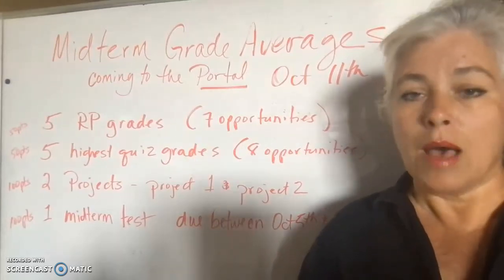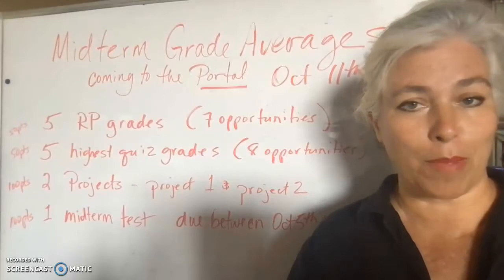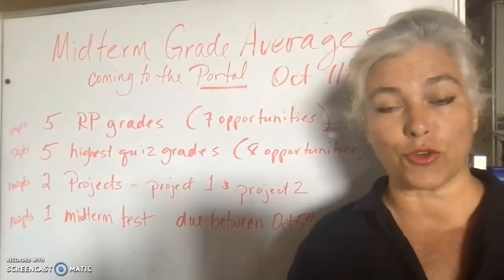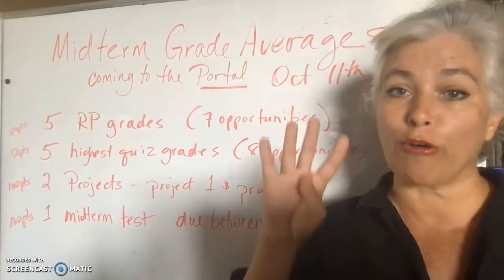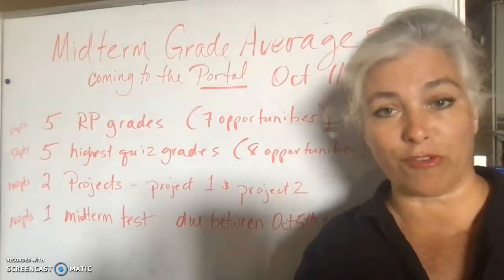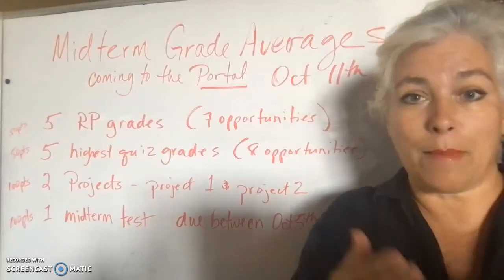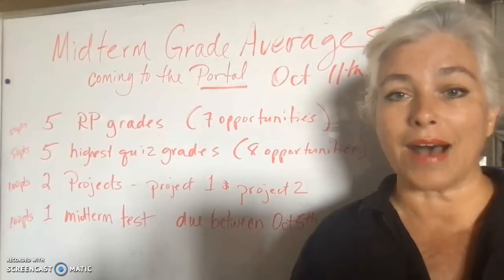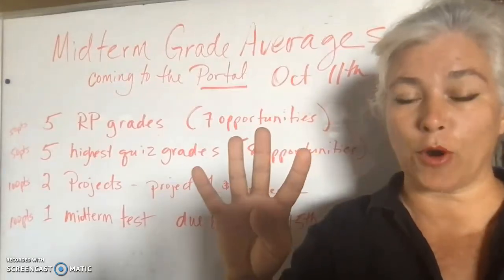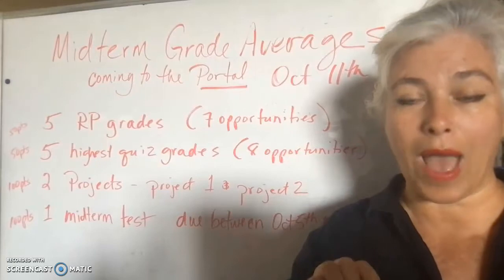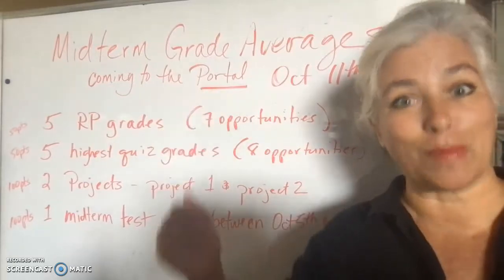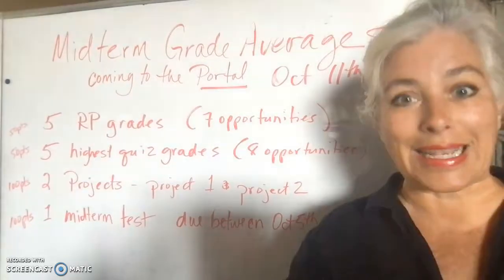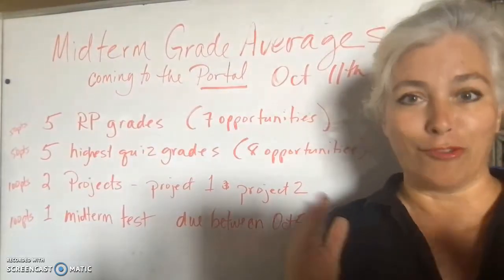Between now and October 10th, there will have been seven reaction paper opportunities. Most of you have already begun your reaction paper quest and have one or two under your belt. This is after all the end of week four, so our fourth opportunity is due the Saturday of week four. Since I'm posting this on Friday of week four, you have four more reaction paper opportunities between now and midterm grade calculation.